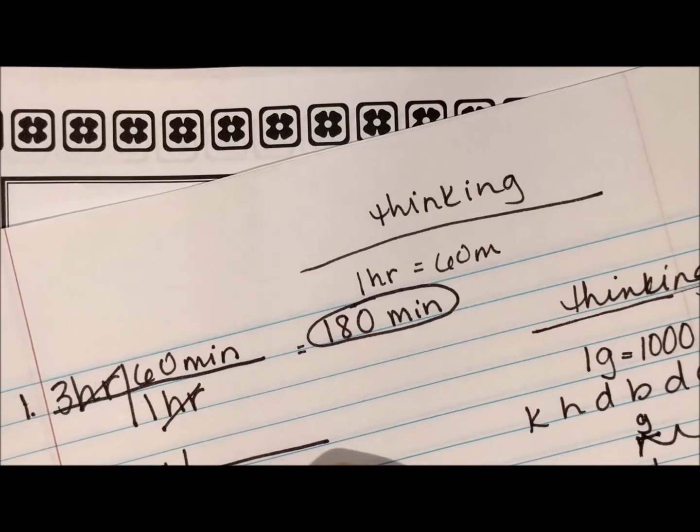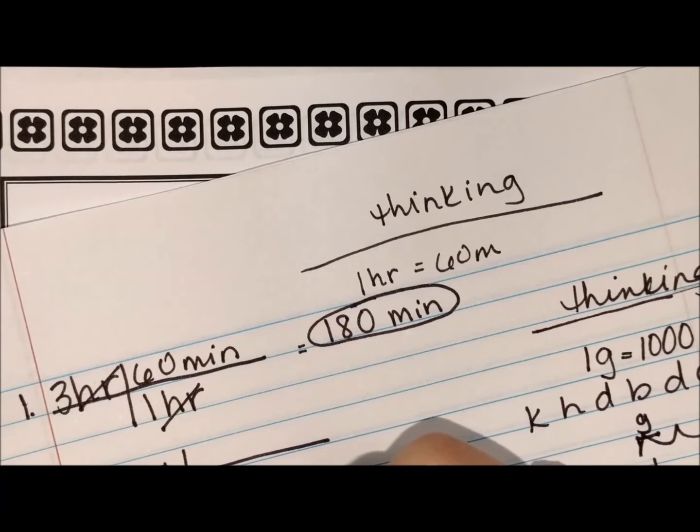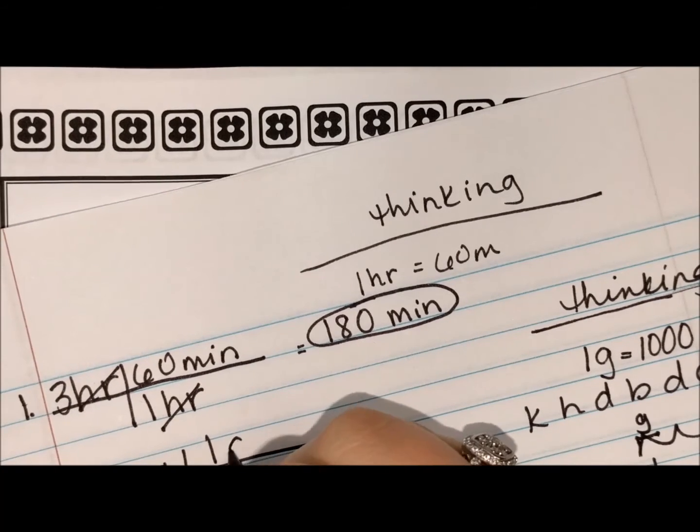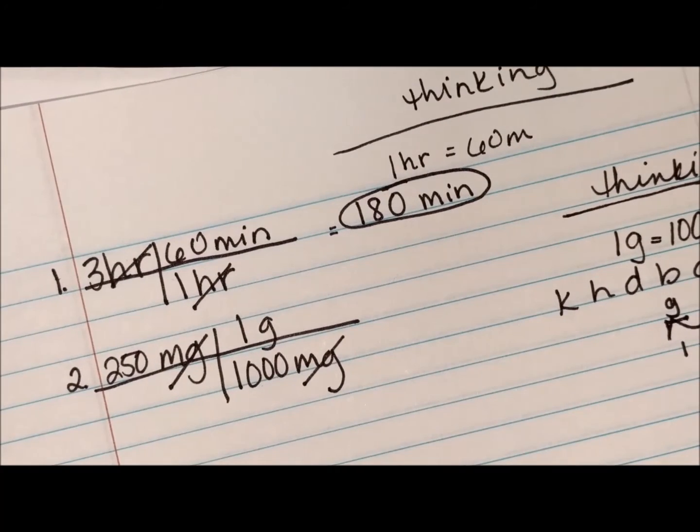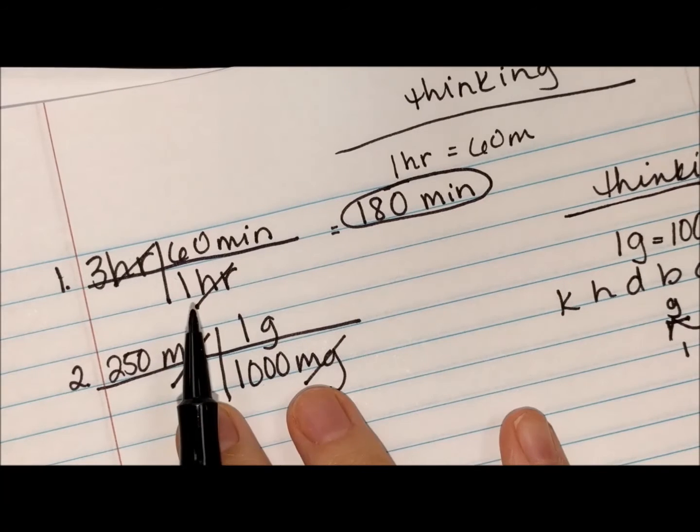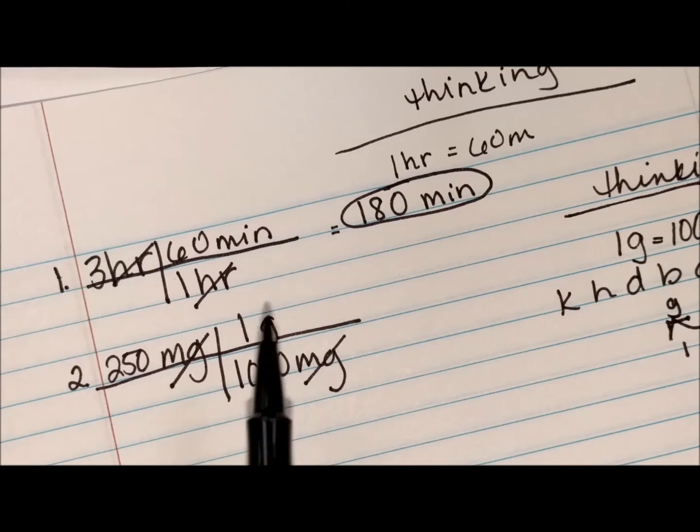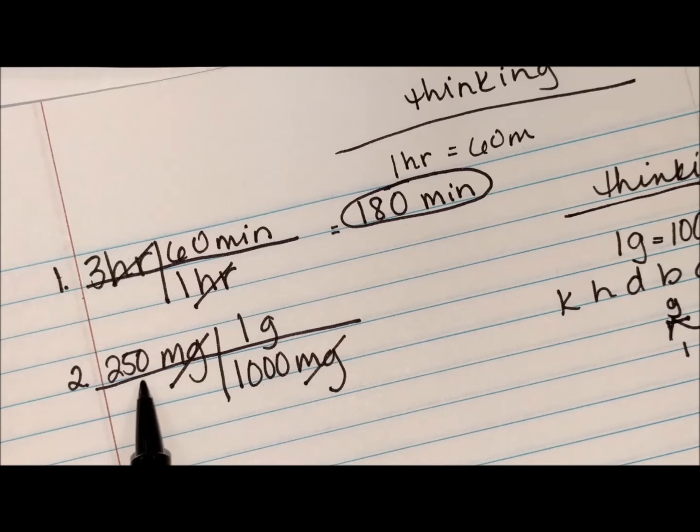So we have one thousand milligrams on the bottom and we have one gram on the top. Milligrams cancel out. If you notice, this looks a tiny bit different than the first example. The first example I had three times 60 divided by one. In this one I have 250 times one divided by one thousand.